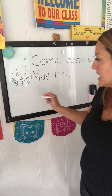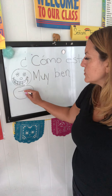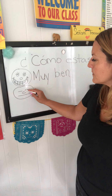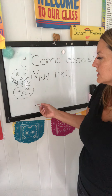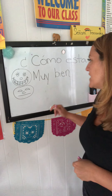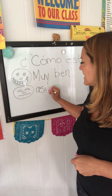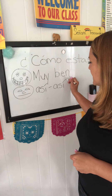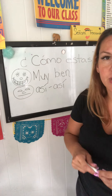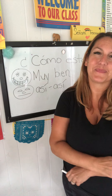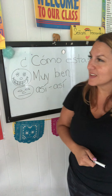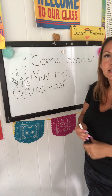Now on your blank piece of paper you should have ¿cómo estás? and muy bien written. Now I want you to draw a so-so face. This kid's not having a great day, not having a bad day — it's just so-so. And I want you to write así así. It has a little accent mark over the i, and that's just the letter you say the loudest — así así. So we have ¿cómo estás?, muy bien, así así.